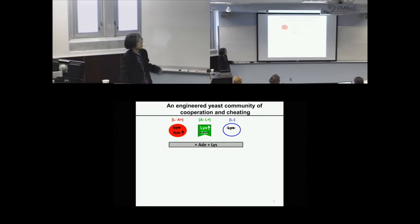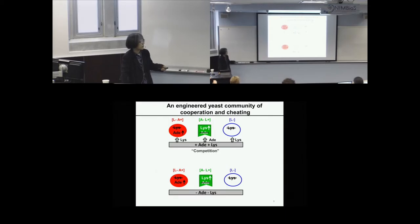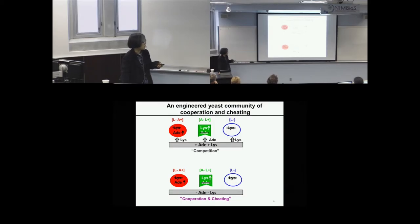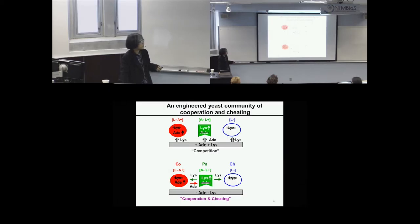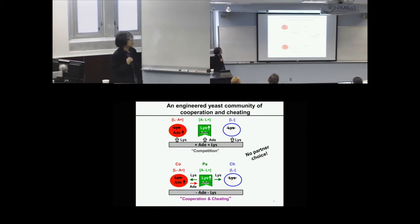In an environment supplying excess adenine and lysine, the three strains engage in pure competition for shared resources and space. However, if the environment supplies no adenine or lysine, the strains also engage in cooperation and cheating. The partner strain releases lysine to both cooperators and cheaters; cooperators reciprocate with adenine while cheaters do not. Since these interactions are engineered, there is no possibility for partner choice, allowing us to study how spatial structure stabilizes cooperation by itself.